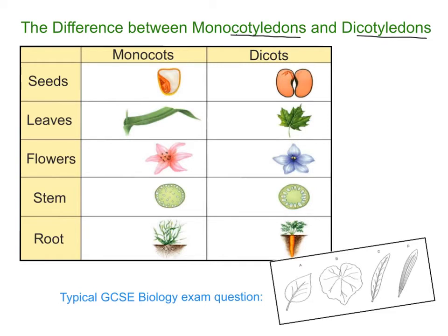So let's get into the differences between the two. We can see in this table that I've got five different things we're going to talk about. In the IGCSE specification particularly, the ones we're really concerned about are the leaves and the seed type. But for completeness, I'm going to go through five key differences in total between monocotyledons and dicotyledons.